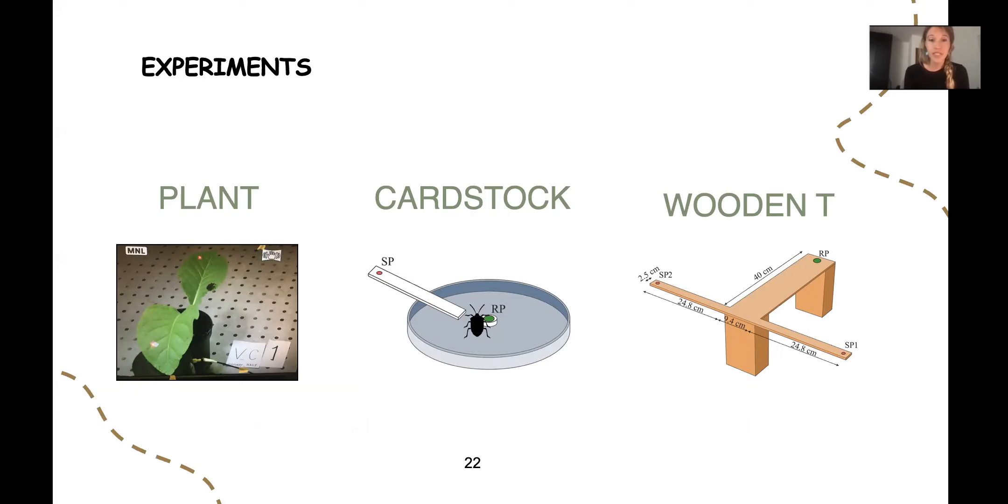Our experiments were performed in three different arenas: a plant, a cardstock, and a wooden T arena. Each arena had a release point where the individual was initially released and a stimulation point in correspondence with the tip of a mini shaker that was the source of the FS2 playbacks. Each trial began with a BMSB male placed at the release point.